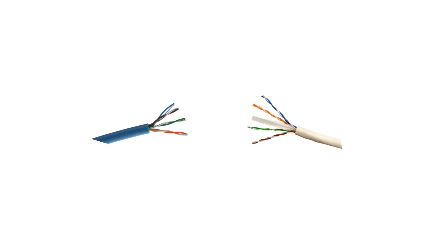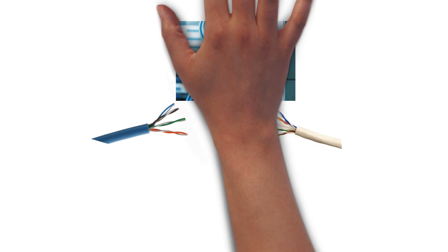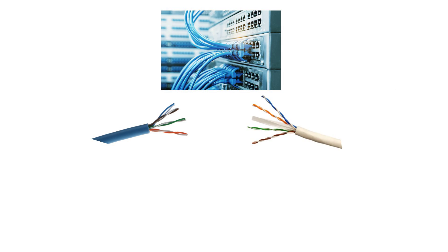Cat5 and Cat6 cables are both types of Ethernet cable used to connect devices in a wired network. While they serve the same purpose, there are several key differences.